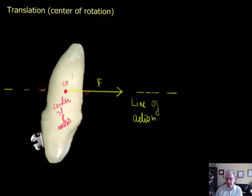So the center of resistance, when the line of action passes right through it with a force, will actually displace the tooth without any rotation. There is no moment of force, no force couple.